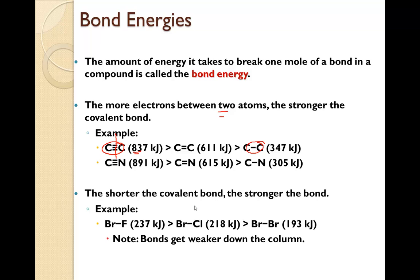Also, the shorter the covalent bond, the stronger the bond. Fluorine is a smaller atom, so when it's bonded to bromine, it actually has more energy than when bromine is bonded to itself because bromine is bigger.